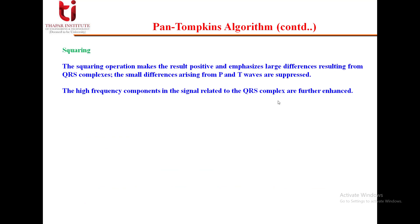The next part is squaring. This squaring operation makes every negative value positive, while positive values remain positive, so the result is entirely positive. It emphasizes large differences resulting from QRS complexes, while small differences arising from P and T waves are suppressed. The high-frequency components in the signal related to the QRS complex are further enhanced.